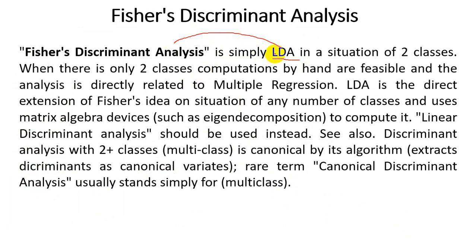LDA is also called a generalized form of Fischer Discriminant Analysis. When there are only two classes, computation by hand is feasible and the analysis is directly related to multiple regression. LDA is the direct extension of the Fischer idea to any number of classes, and uses matrix algebra devices such as eigen decomposition to compute it. Linear Discriminant Analysis should be used instead for multi-class problems.